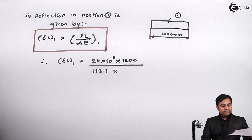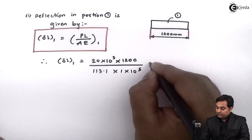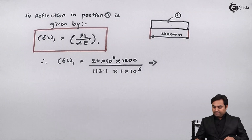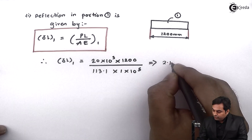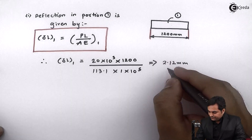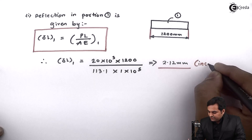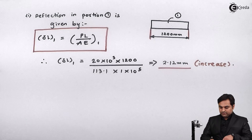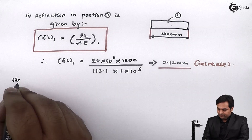The length of Section 1 is 1200 mm, area A1 = 113.1 mm², and Young's modulus = 1×10⁵ N/mm². From this, deflection in Section 1 = 2.12 mm. This answer is positive, which means there is an increase in length.